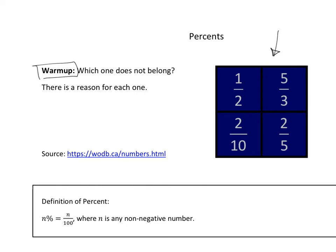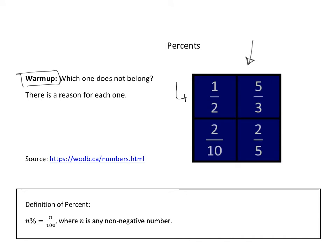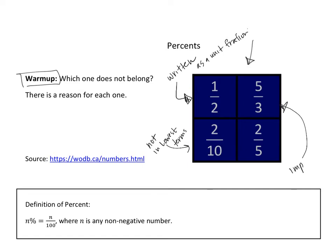Now that you've thought about it, I'll give you a few of my reasons. I was thinking that one half didn't belong because it's the only one that's written as a unit fraction. Remember, unit fractions are like one half, one third, one fourth, one fifth. Two tenths is the only one that's not in lowest terms. And five thirds — that's the only one that's an improper fraction. I also noticed it's the only one with a denominator of three, which makes it the only one here that is not a terminating decimal.